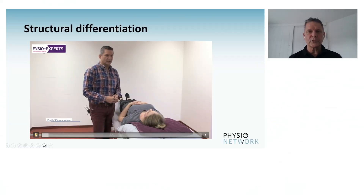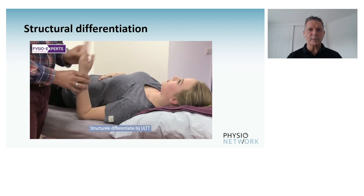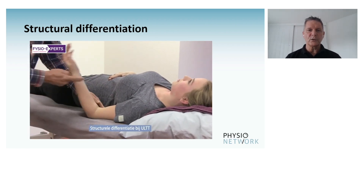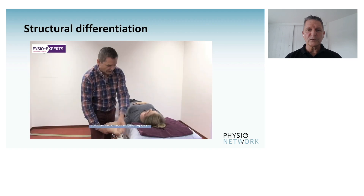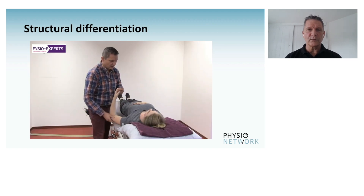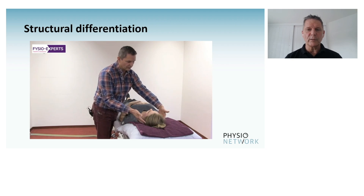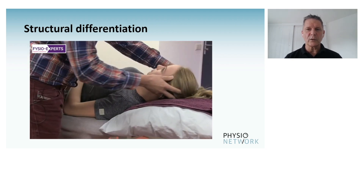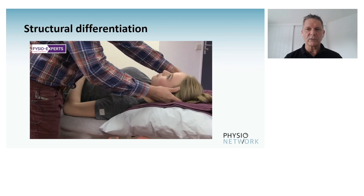When we have a patient, we try and position them as we did in the upliminal tension test. We check if all the joints have the maximal range of motion needed for a structural test. For an upliminal tension test, we explain to patients what we mean when we ask them to slide the head away from us or towards us later on.